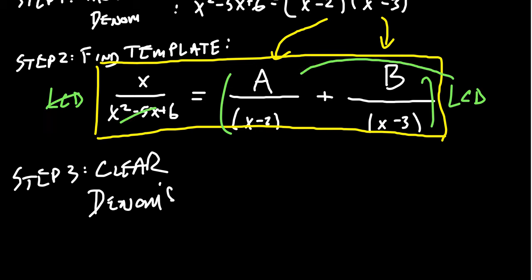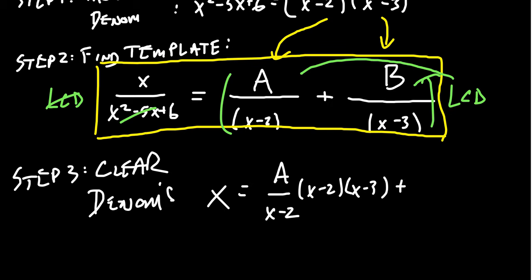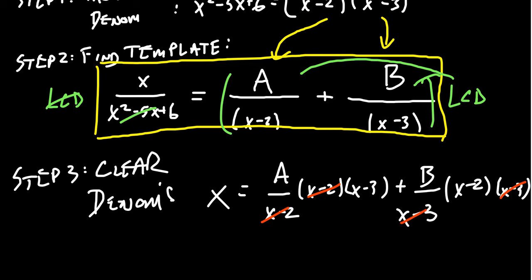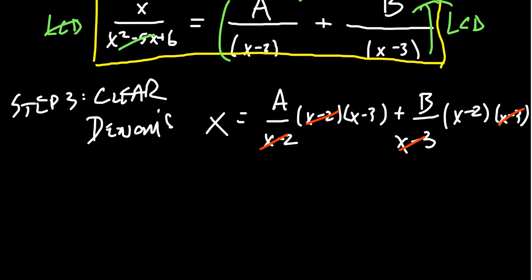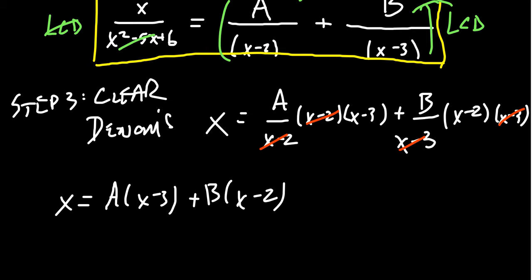On the right-hand side, we distribute through: A over x minus 2 times x minus 2 times x minus 3, and B over x minus 3 times x minus 2 times x minus 3. The x minus 2 cancels in the first fraction and the x minus 3 cancels in the second. Our simplified equation with no more fractions looks like: x equals A times x minus 3 plus B times x minus 2.